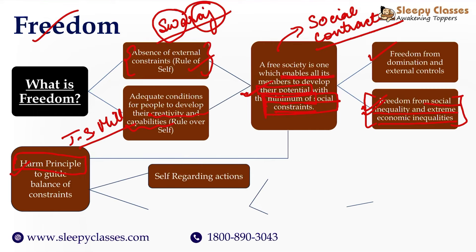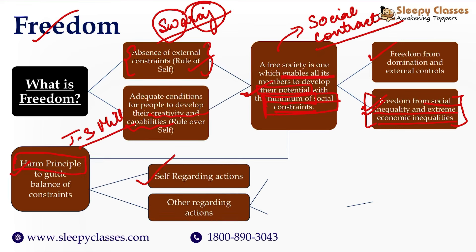The book relates this to a very great concept given by J.S. Mill — the harm principle — which guides how you decide which constraints are minimal, reasonable, and excessive. Actions are divided into two kinds: first, self-regarding actions, and next, other-regarding actions. Self-regarding actions only impact oneself — for example, deciding who to marry, or which degree — medical, non-medical, humanities, or commerce — to pursue.